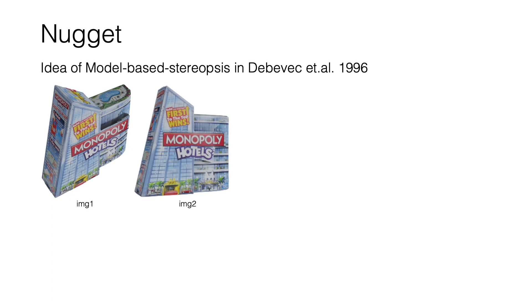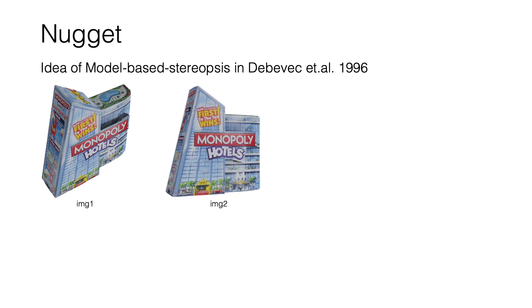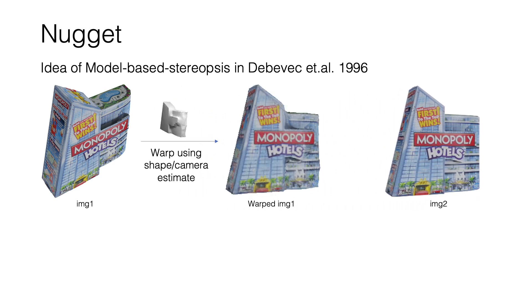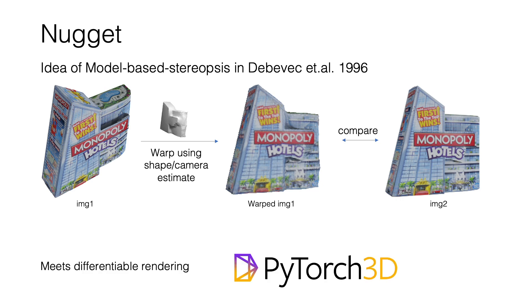We used the idea of model-based stereopsis from Debevec et al. in 1996. Instead of directly comparing images that look very different, they warp the first image using the underlying shape and camera estimate to what it would look like from the second viewpoint before comparing to the second image. We combine this with modern differentiable rendering tools like PyTorch3D to build a simple iterative approach.